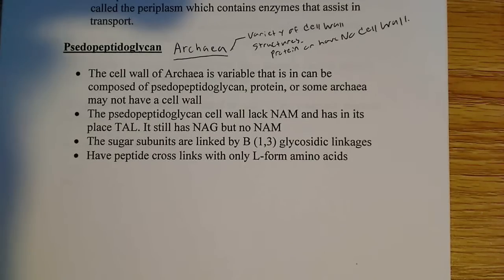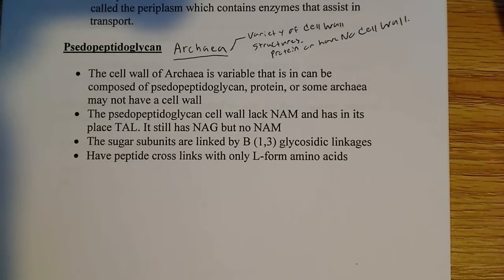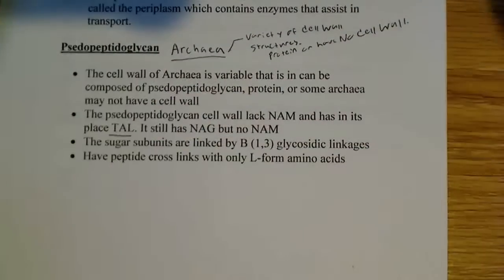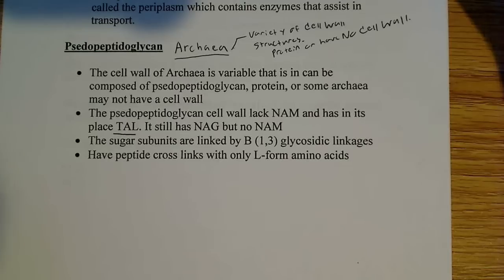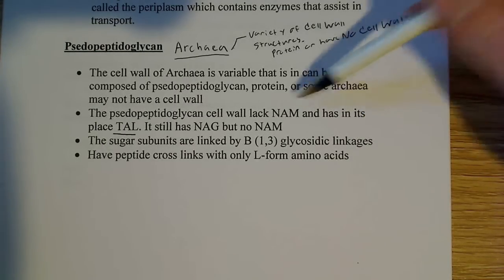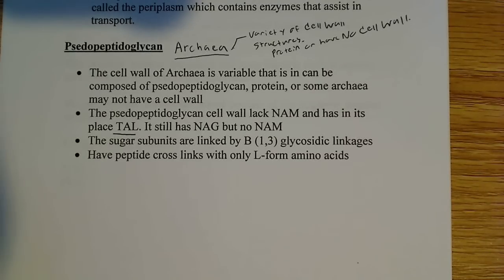Pseudopeptidoglycan cell walls lack NAM — that's N-acetylmuramic acid — and in its place they have TAL, T-A-L. You can look up the exact pronunciation of the full molecule name, but NAM and TAL are how these are commonly referenced on exams. So NAM is essentially replaced by this other sugar monomer, TAL.